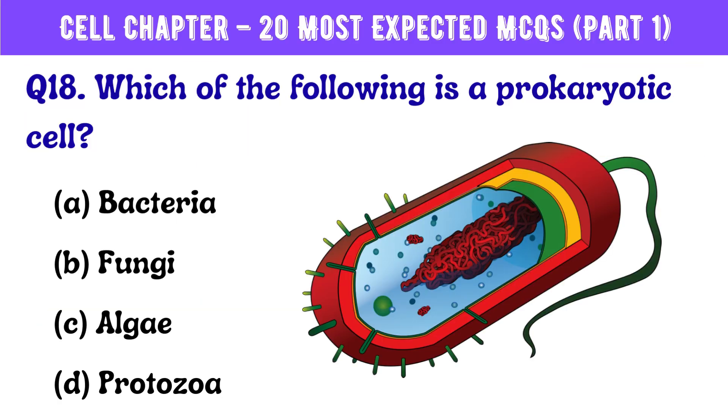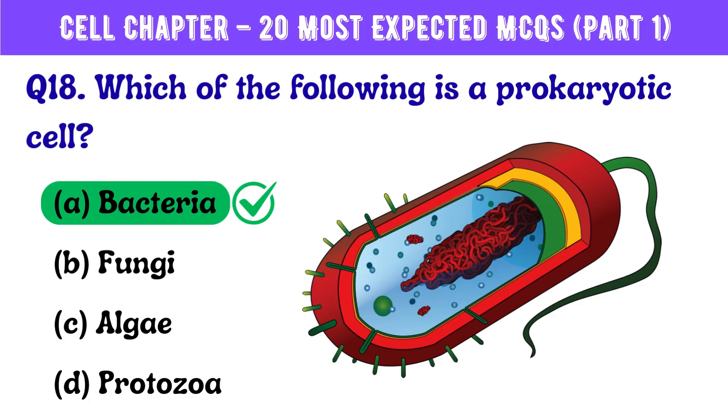Question number 18. Which of the following is a prokaryotic cell? Correct answer is option A: Bacteria.